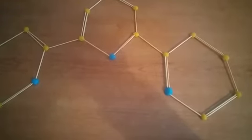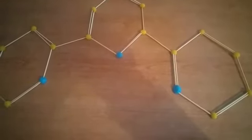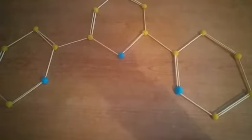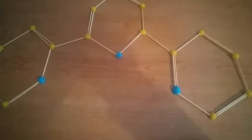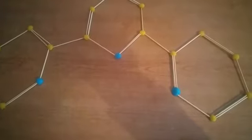Terpyridine forms complexes with most transition metal ions, like other polypyridine compounds such as 2,2'-bipyridine and 1,10-phenanthroline.